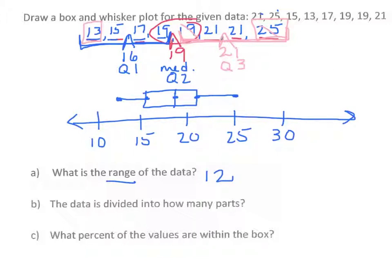The data is divided into how many parts. Remember these are 25%, another 25, another 25, and another 25. So four parts. What percent of the values are in the box? So two sets of 25%, so 50% of all your values are in the box.